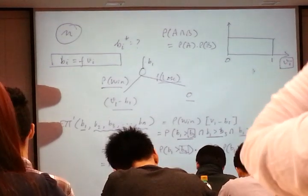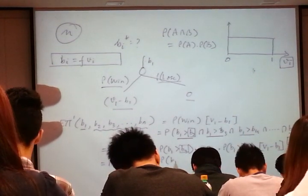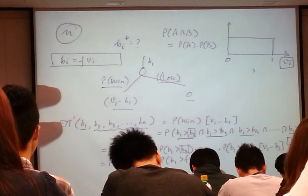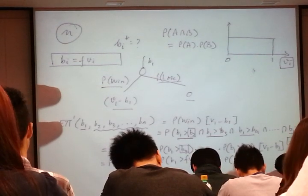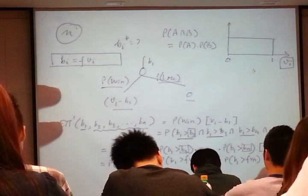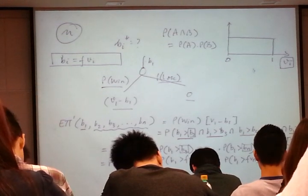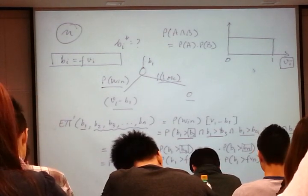So, probability B1 greater than F·V2 times probability B1 greater than F·V3 times probability B1 greater than F·VN. Of course, your payoff is V1 minus B1. Next step.